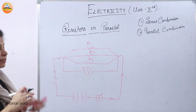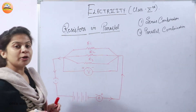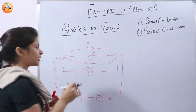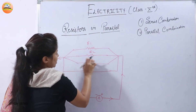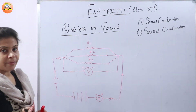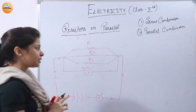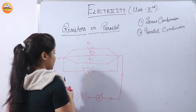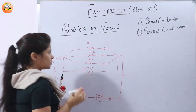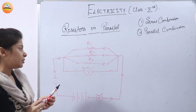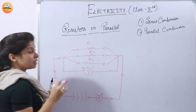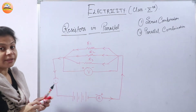Unlike the series combination where current remains the same, in a parallel combination the potential difference across the two ends of R1, R2, and R3 remains the same. However, the current changes — whenever the current comes in, it divides into three parts through each branch. So the amount of current flowing through the three resistors is totally different. This difference in current distribution changes the derivation.